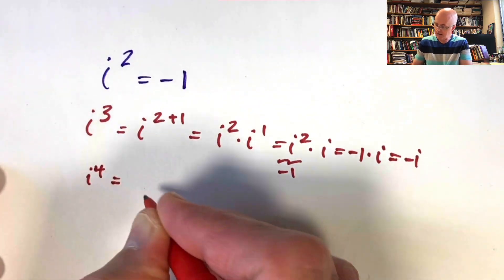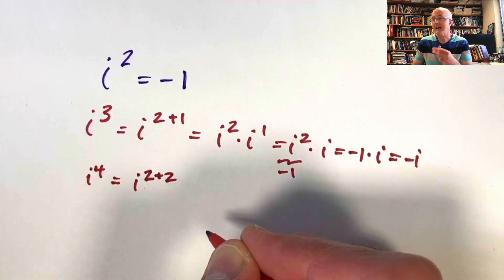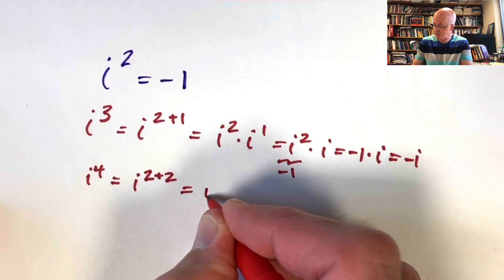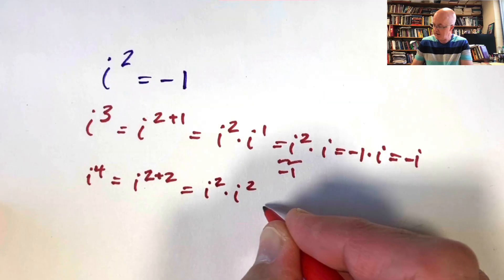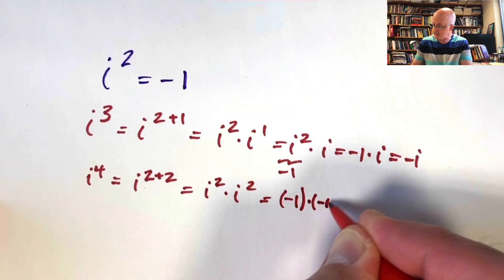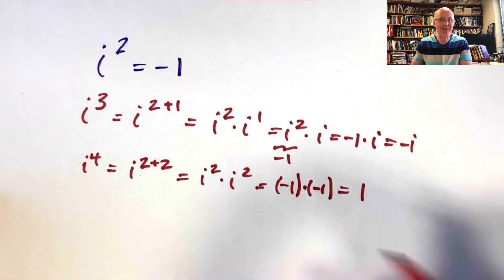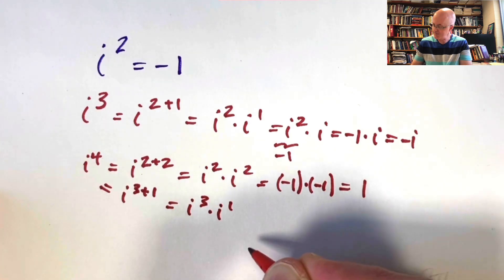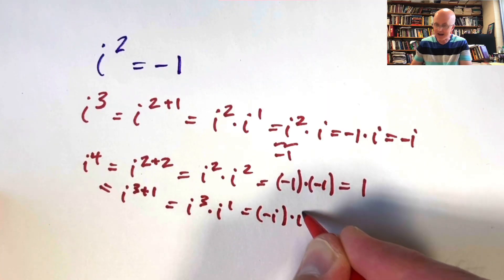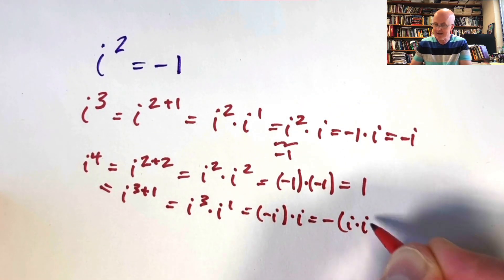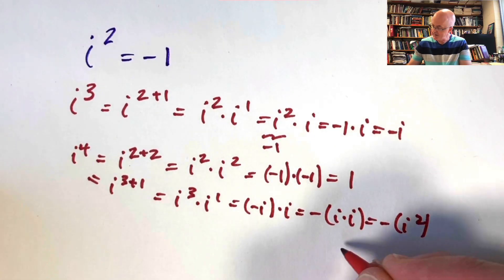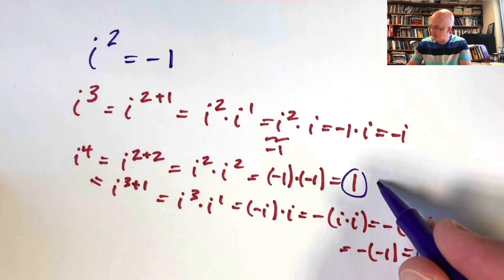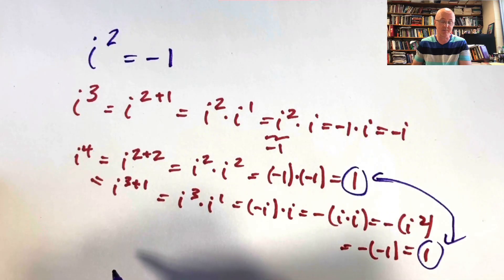What about i to the fourth power? I can think of four either as two plus two or three plus one. Using two plus two: i to the fourth is i squared times i squared, which is negative one times negative one, giving positive one. Using three plus one: i to the fourth is i cubed times i, which is negative i times i. Factoring out the negative sign gives negative one times i squared, which is negative of negative one — also positive one. Both methods give the same answer: i to the fourth is positive one.